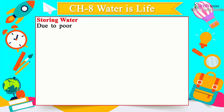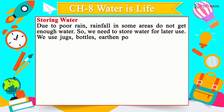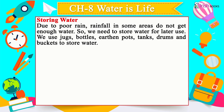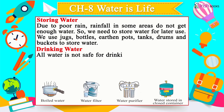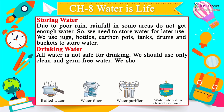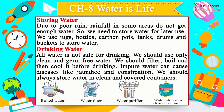Storing Water: In some areas with poor rainfall, people do not get enough water, so we store water in jugs, bottles, earthen pots, tanks, drums and buckets. Drinking Water: Not all water is safe for drinking — we should use only clean, germ-free water. We should filter, boil and cool it before drinking. Impure water can cause diseases like jaundice. We should store water in clean, covered containers.